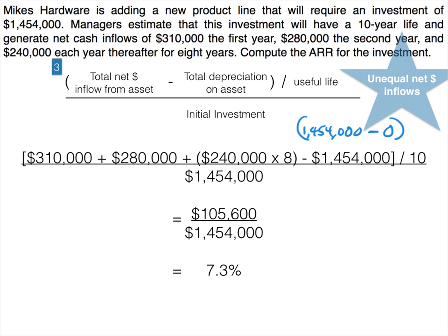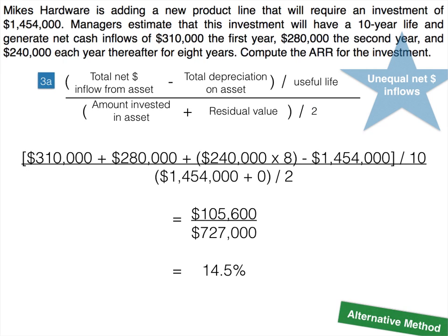Now use the alternative method for the same Mike's Hardware problem, expecting a higher rate. Under the alternative method form three, the numerator is the same, but the denominator is the initial investment plus residual value — which is zero here — divided by two. So we divide by $1,454,000 divided by two. The accounting rate of return comes out to 14.5%, which is higher than the original method's 7.3%, as expected.